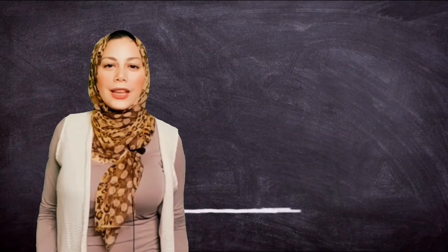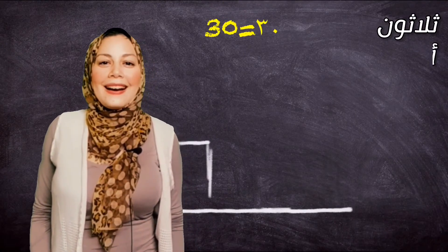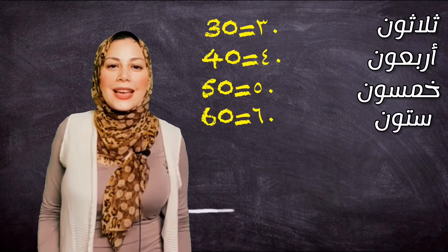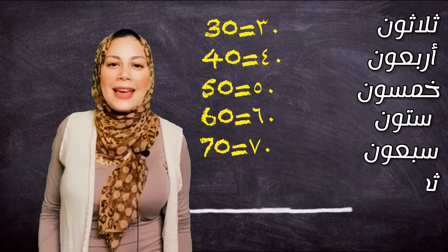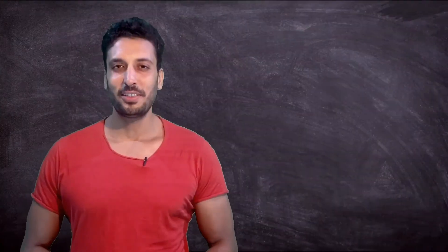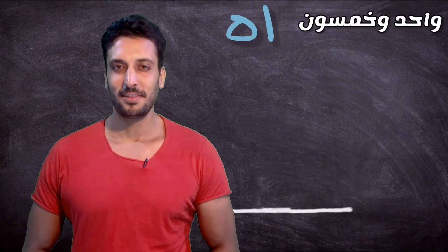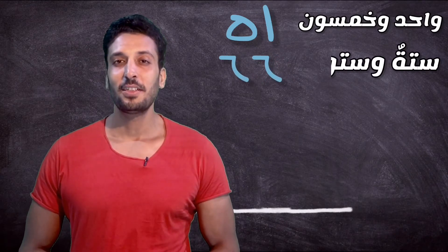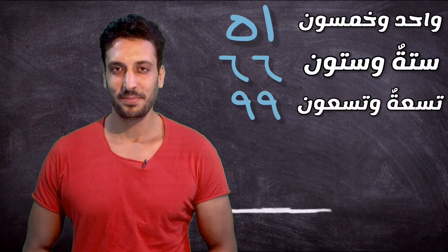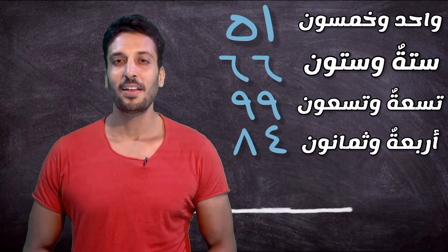Let's take the numbers from 30 to 100. Before we continue, let's try to say some numbers randomly: 51, 66, 99, 84, 23.